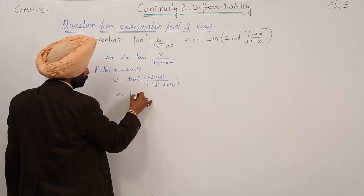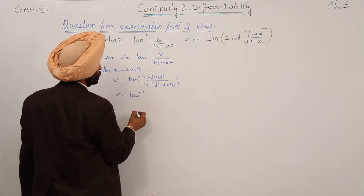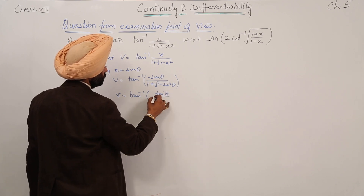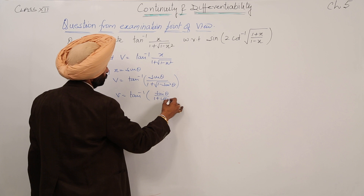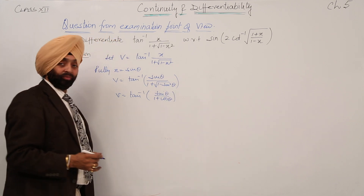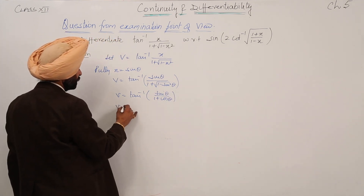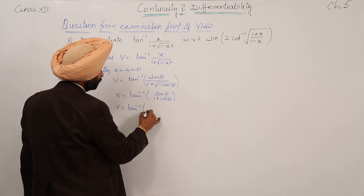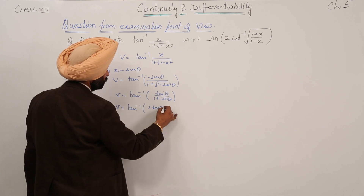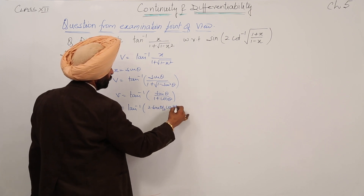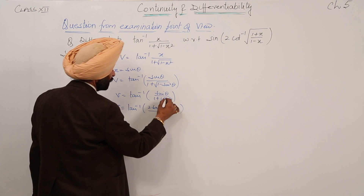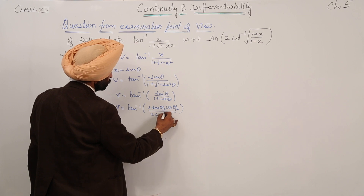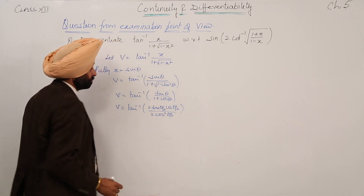v is equal to tan inverse of sin theta upon (1 plus cos theta). Now, we can write v equal to tan inverse, where sin theta can be written as 2 sin(θ/2) cos(θ/2), and 1 plus cos theta equals 2 cos squared(θ/2).